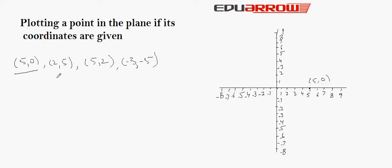Now, the point (2, 5). Here, 2 is the x coordinate and 5 is the y coordinate. First, we will see for x coordinate — 2 is here. Now, for y coordinate that is 5, we will see perpendicular to the x axis along with the y axis — 5 is here. So, our next point (2, 5) can be plotted here.